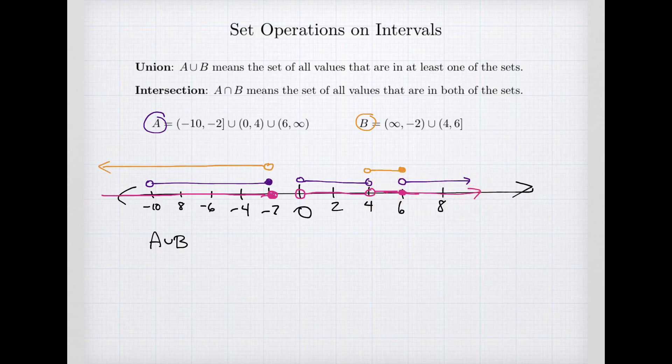My union has a set minus infinity to minus 2, we never include infinity but we do include the number negative 2. The second chunk of our set is the interval from 0 to 4. We don't include either endpoint. And then union our last interval starts at 4 and goes forever. And so we have 4 to infinity, and that's my union set.